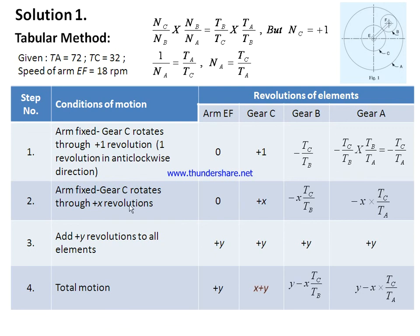Second step: keep the arm fixed but give plus x revolutions to gear C. The speed of gear B becomes minus x times Tc by Tb, and similarly the speed of gear A becomes minus x times Tc by Ta. Third step, common in almost all problems: add y revolutions to all elements. The total motions become — arm: y; gear C: x plus y; gear B: minus x·Tc/Tb plus y; gear A: minus x·Tc/Ta plus y.